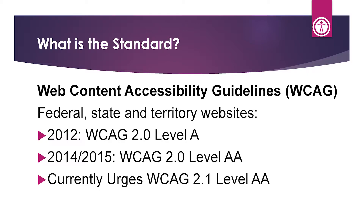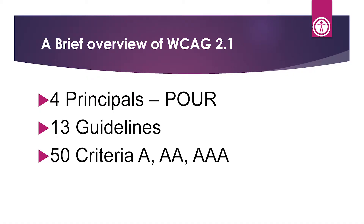Federal, state, and territory websites must contain compliant content. Initially there was a rollout plan: by 2012 they wanted to be WCAG 2.0 Level A compliant, and by the end of 2014 they wanted to meet the Double-A level. Their website currently urges moving toward WCAG 2.1 Double-A compliance, although it's not yet a mandate. Expect that it will be, especially since WCAG Silver — the next iteration of the guidelines — is planned for release sometime in 2021.